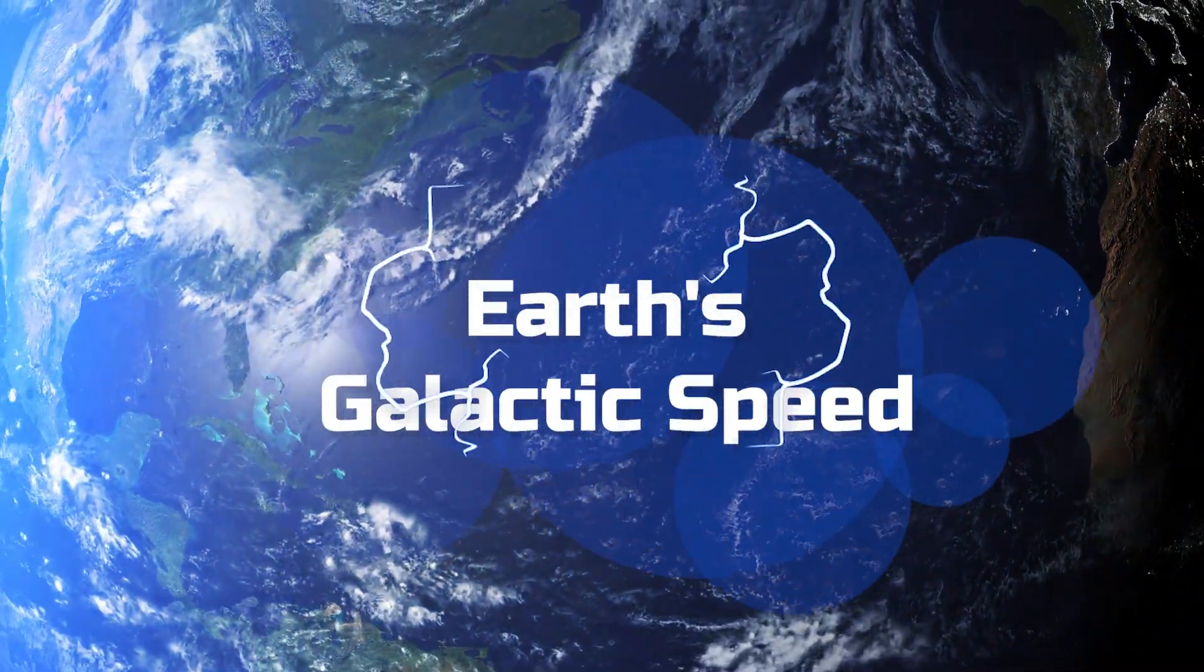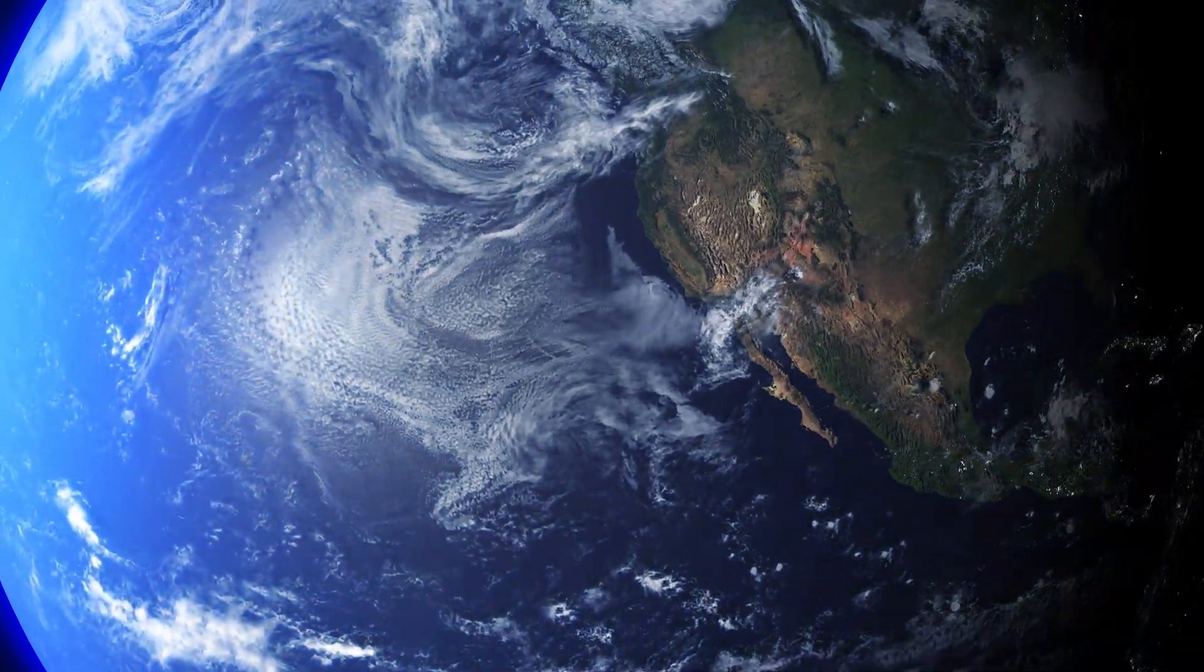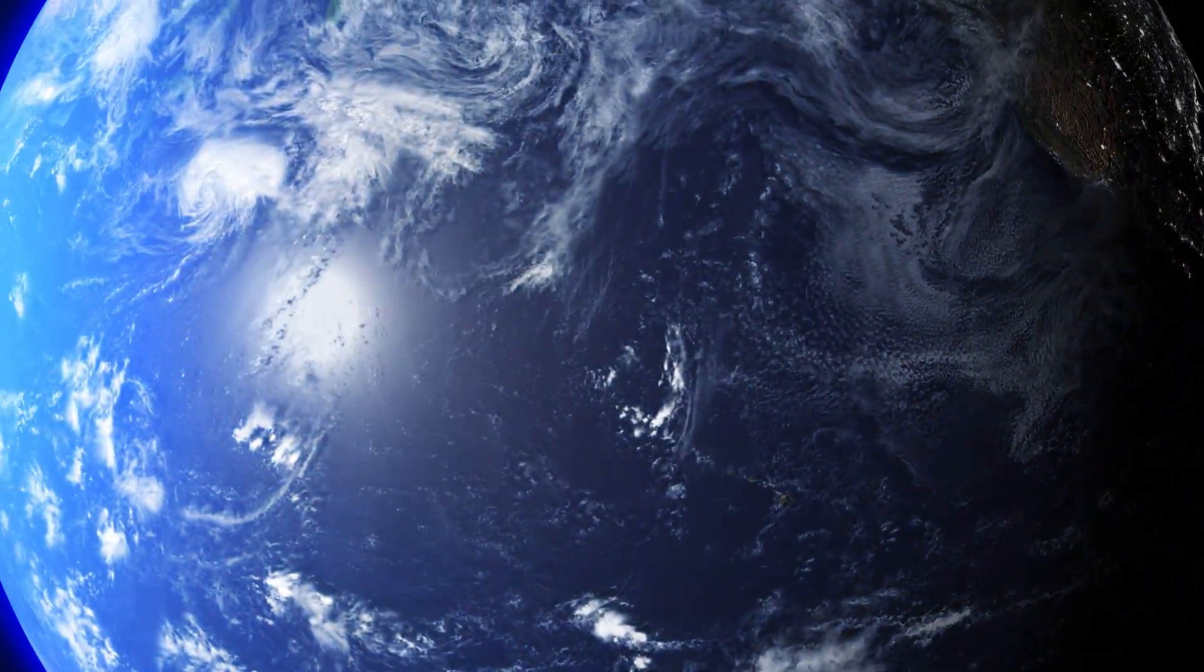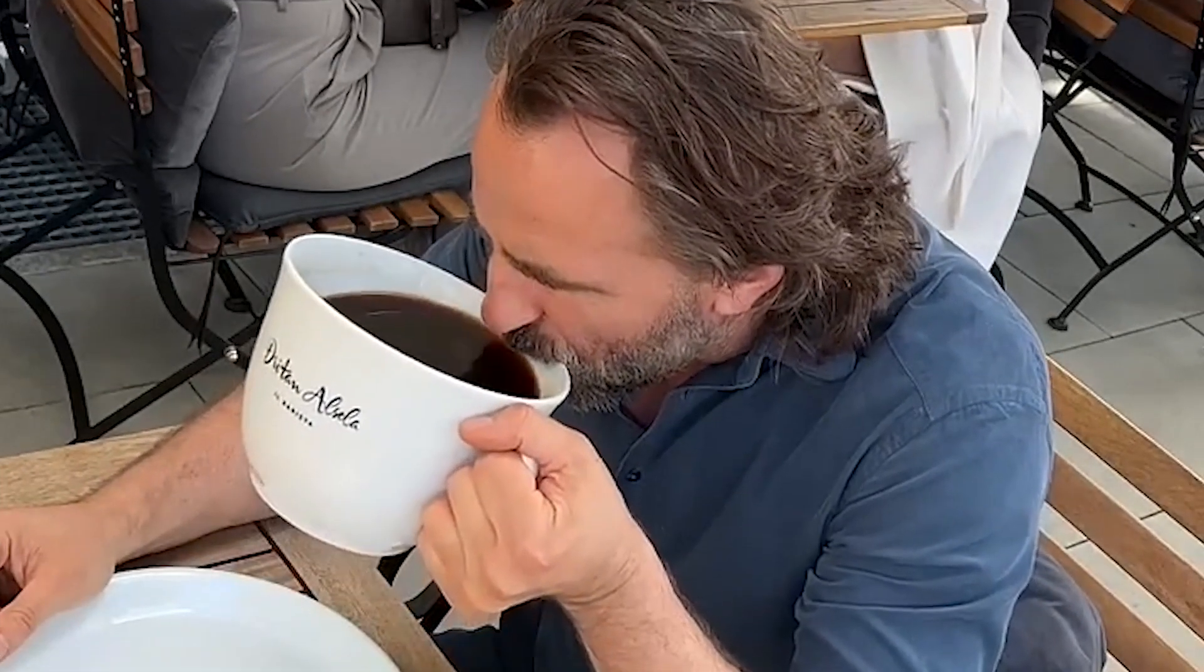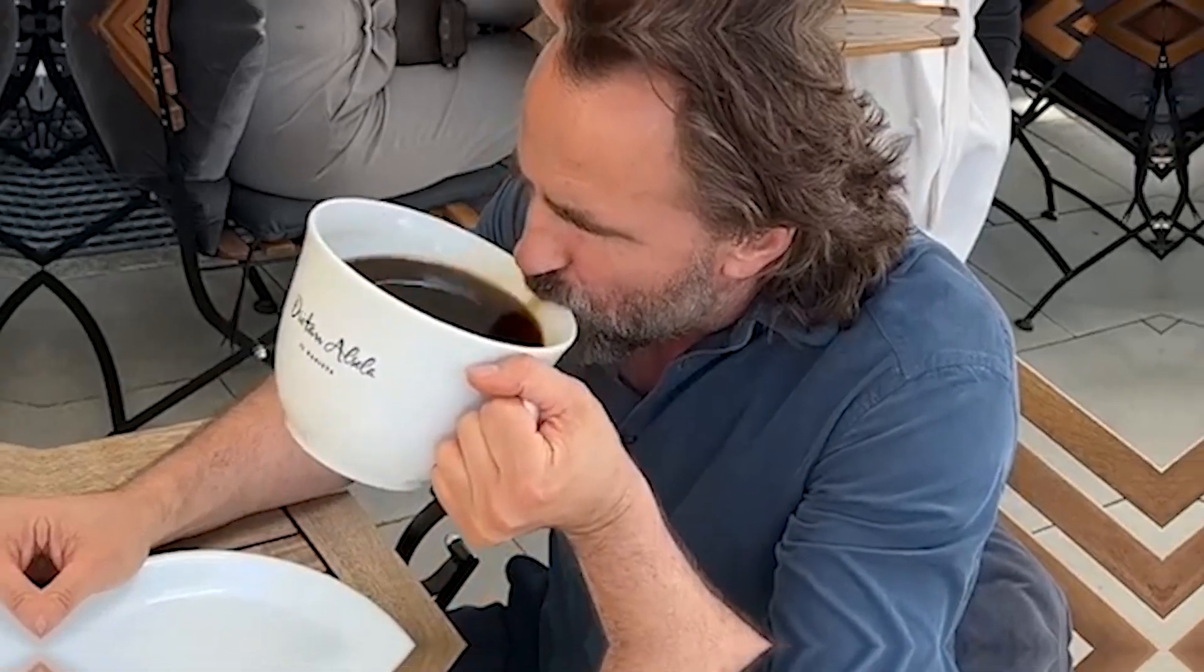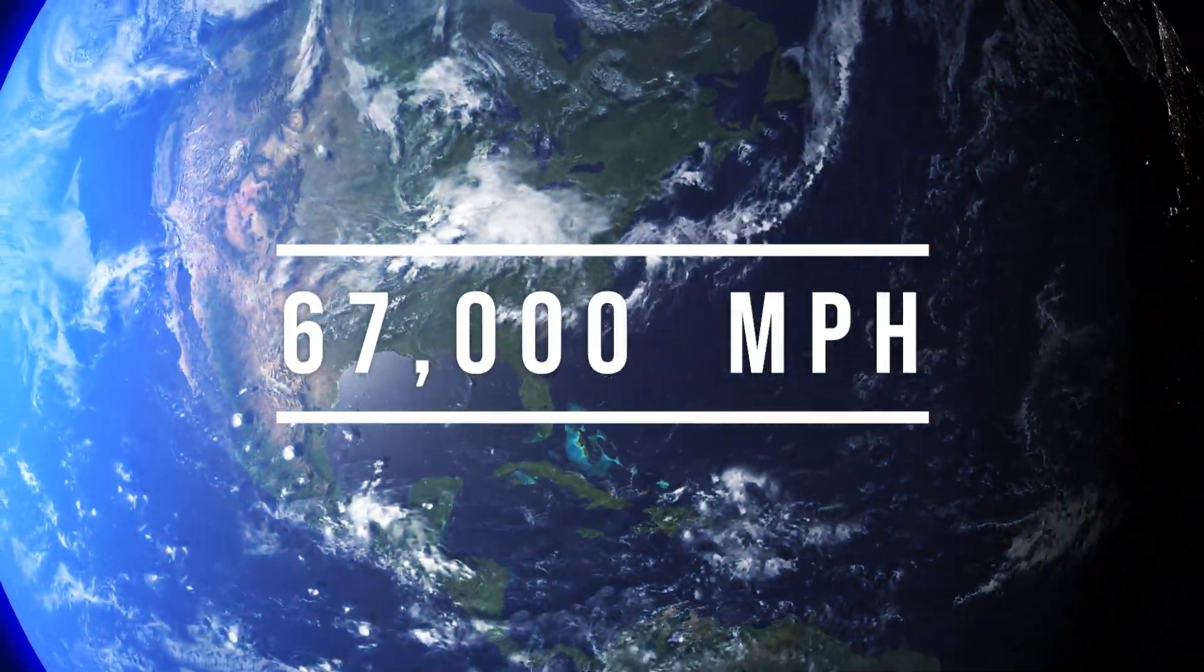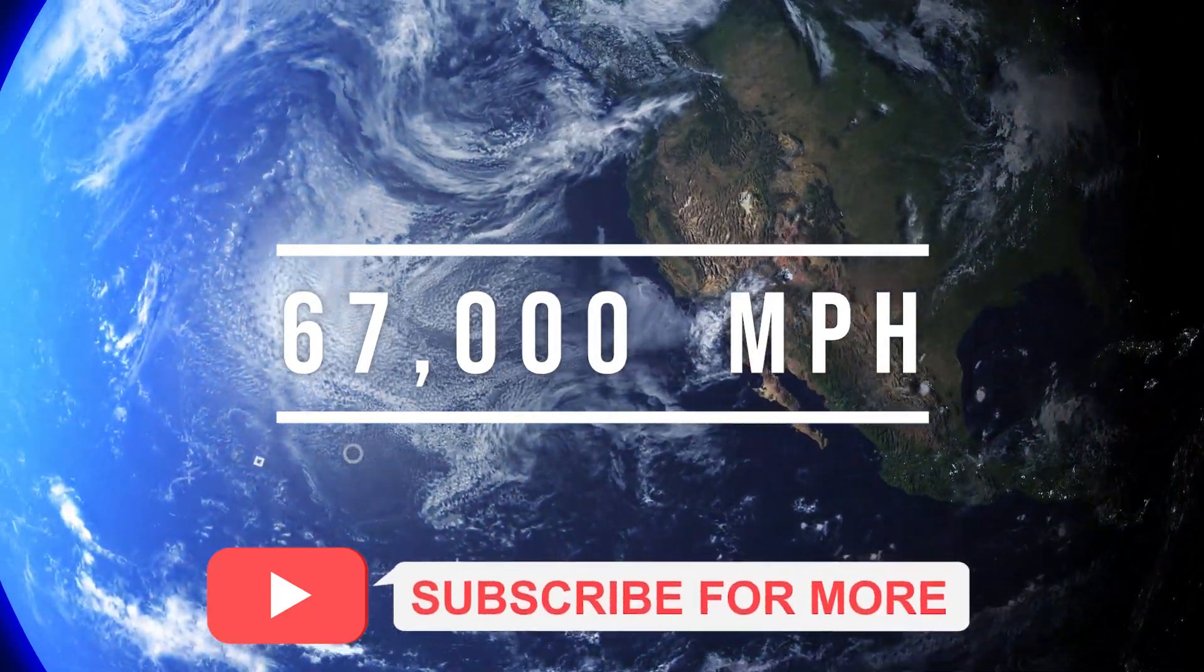Number 2: Earth's Galactic Speed. At number 2, hold on tight as we blast off with a mind-boggling fact about our own Earth. Brace yourselves. While you're sipping your morning coffee, Earth hurtles through space at an astonishing 67,000 miles per hour. Buckle up for the cosmic speed ride.